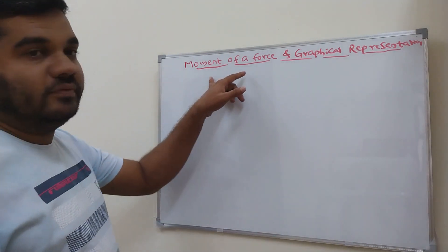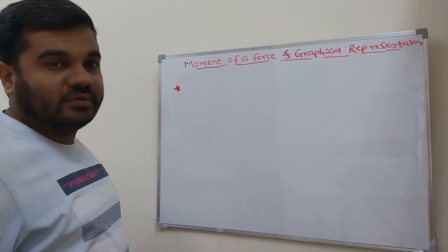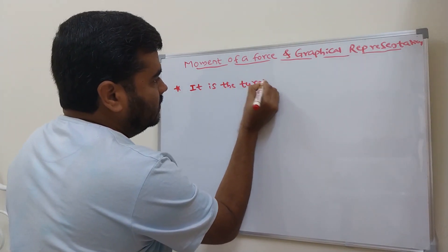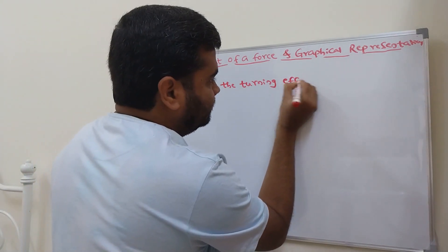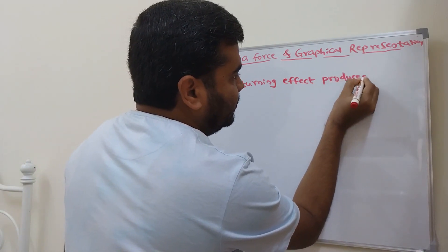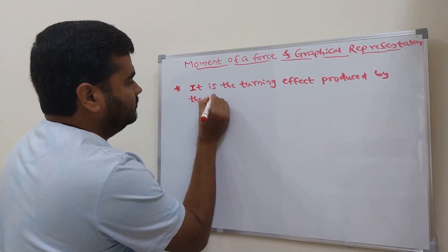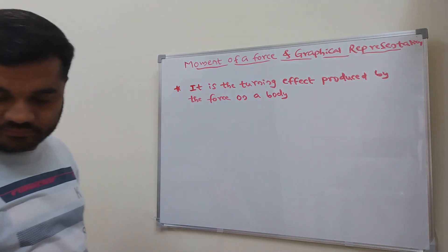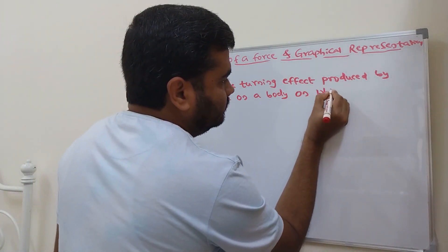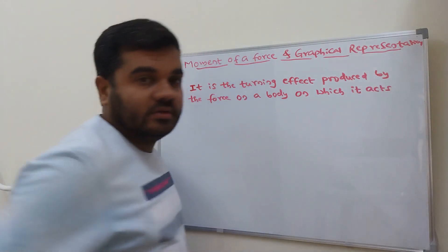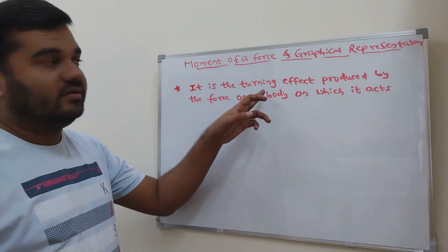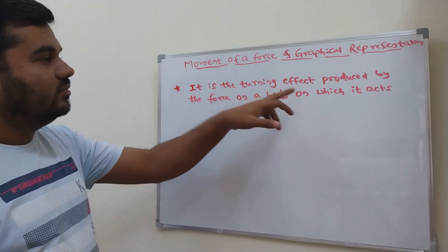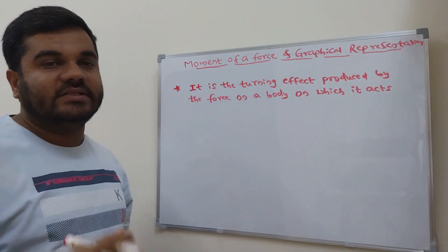The definition of moment of a force: it is the turning effect of force produced by the force on a body on which it acts. That is, the moment of a force is defined as the turning effect produced by the force on the body where it acts.